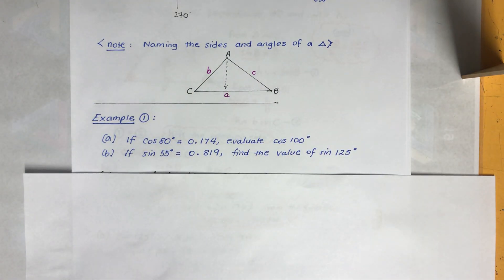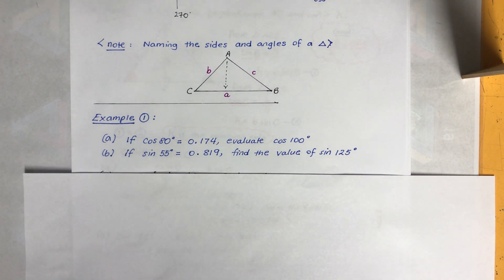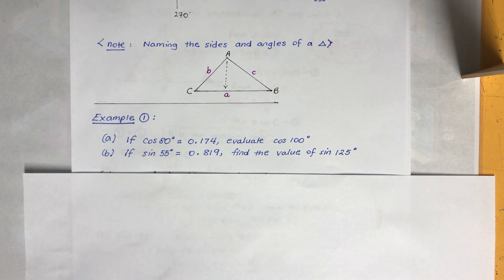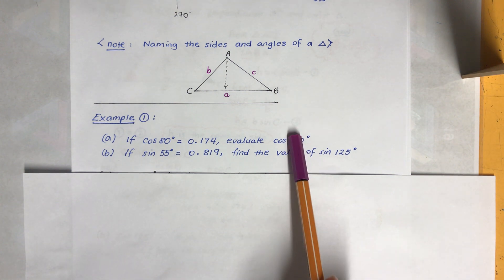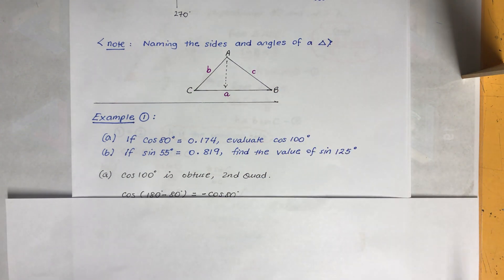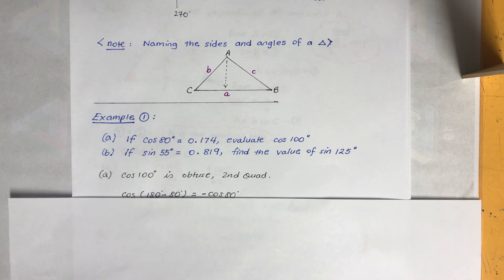Example one: if cos 80° = 0.174, evaluate cos 100°. And if sin 55° = 0.819, find sin 125°. First, let's make a prediction. Both 100° and 125° are obtuse, placing them in the second quadrant. In the second quadrant, only sine is positive, so cosine will be negative. We'll need to apply the formula 180° minus θ.